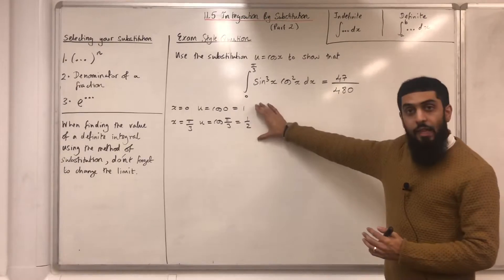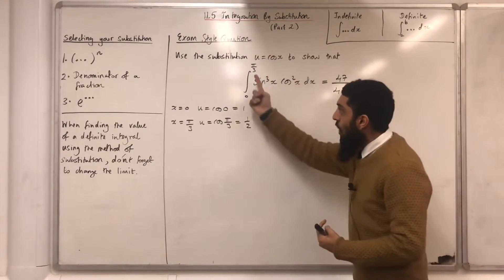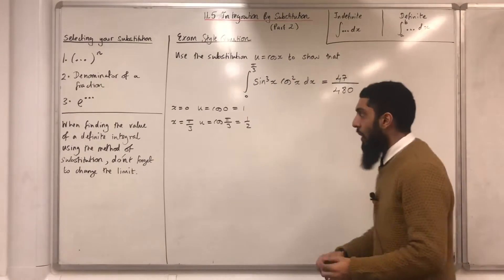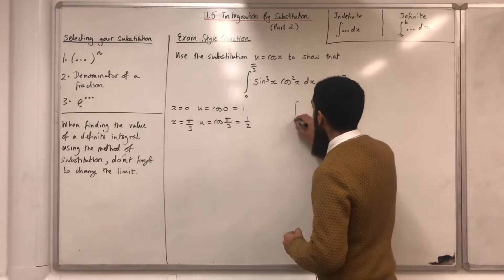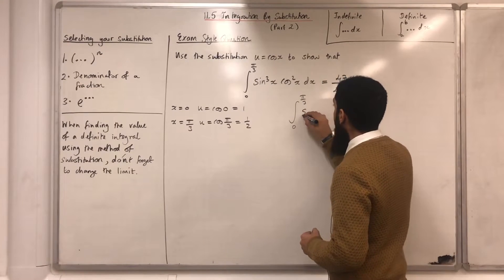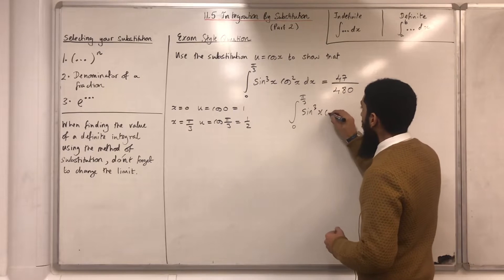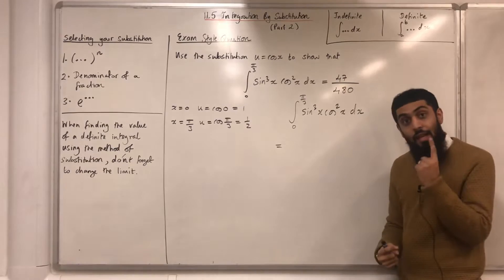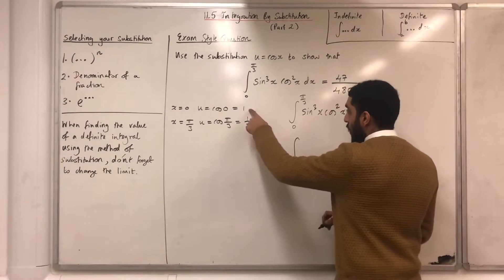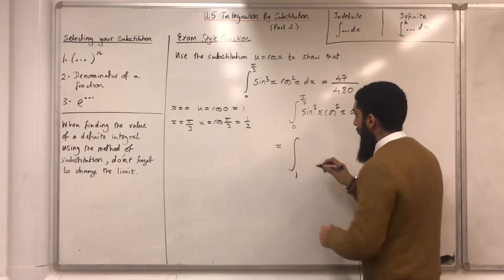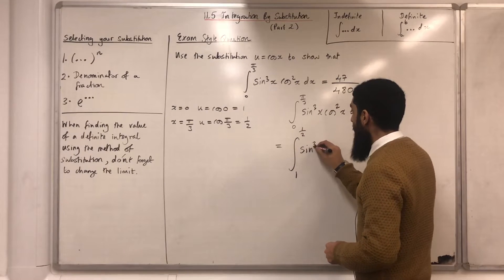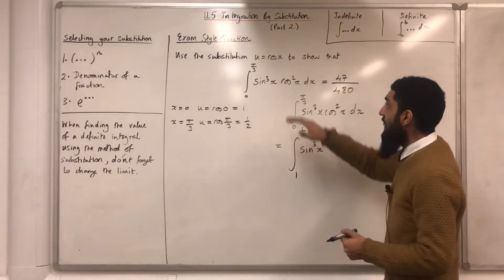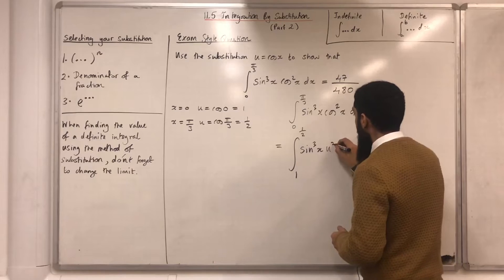Now we've changed the limits. Our next step is to rewrite this whole integral in terms of u. We can break it down into parts. We have the integral from 0 to π/3 of sin³x · cos²x dx. This is the same as the integral from 1 to a half of sin³x, and cos²x can be replaced with u² because u = cos x, giving sin³x · u² dx.